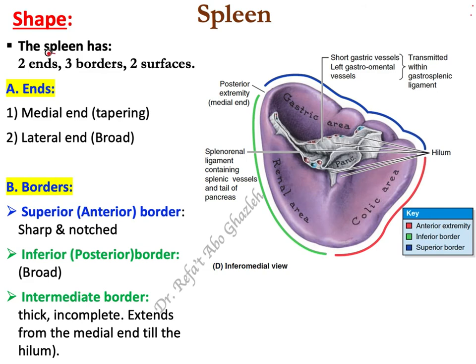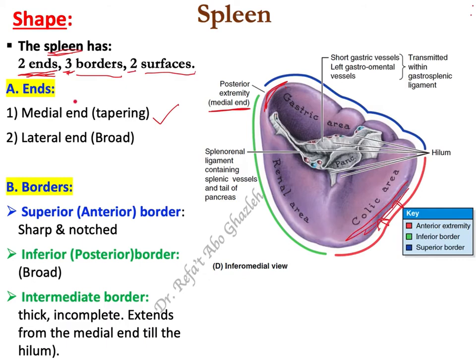The spleen has two ends, three borders, and two surfaces. Starting with the ends: there is a medial end, where the spleen becomes narrower — it is tapering — and a lateral end, which is broad. Looking at the anterior view, lateral is toward the side and medial is toward the midline. So this medial extremity is narrow and the lateral end is broad.